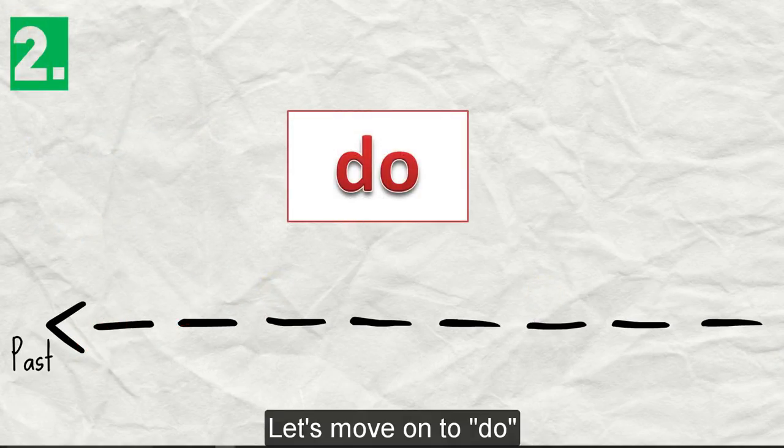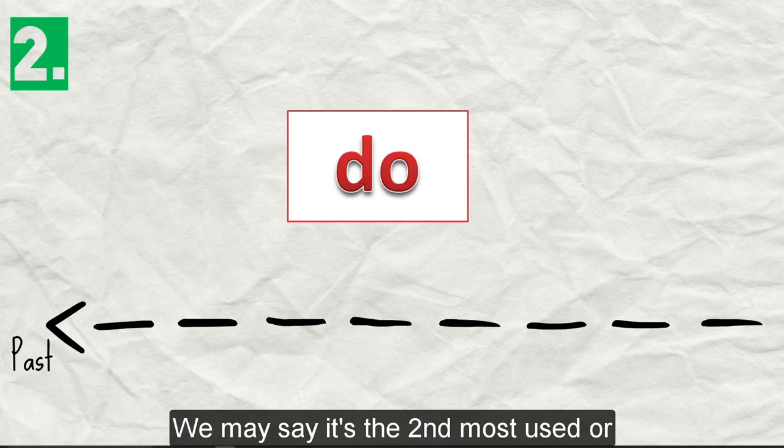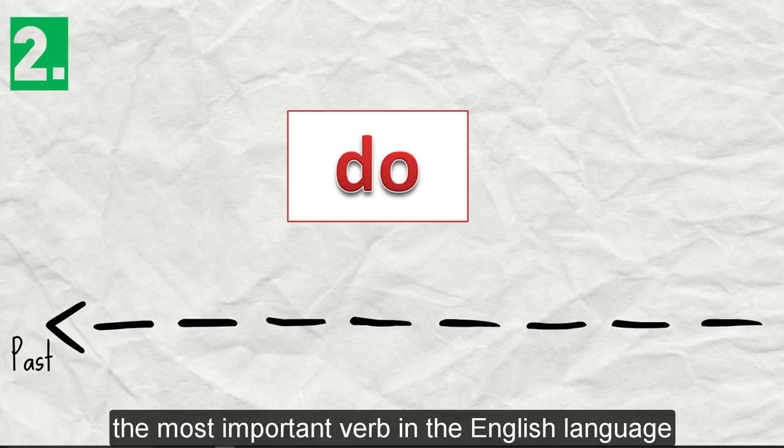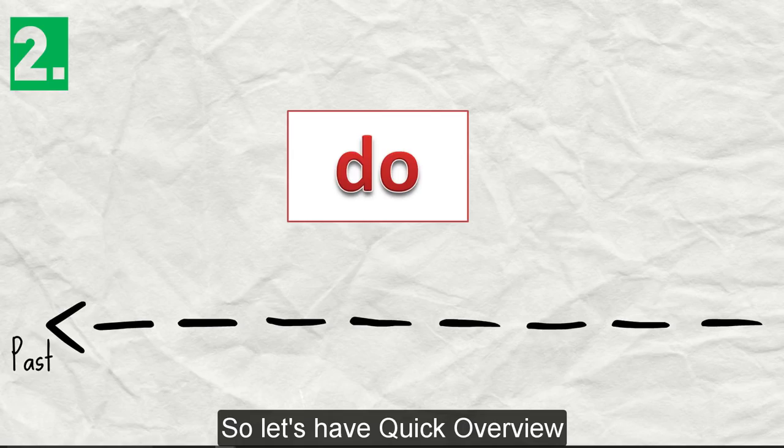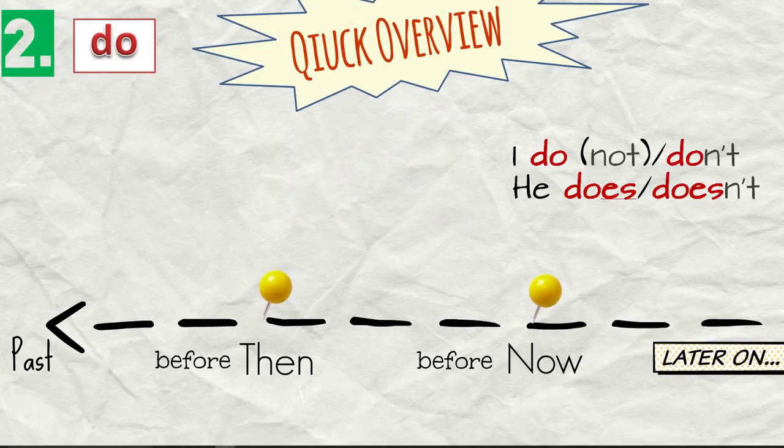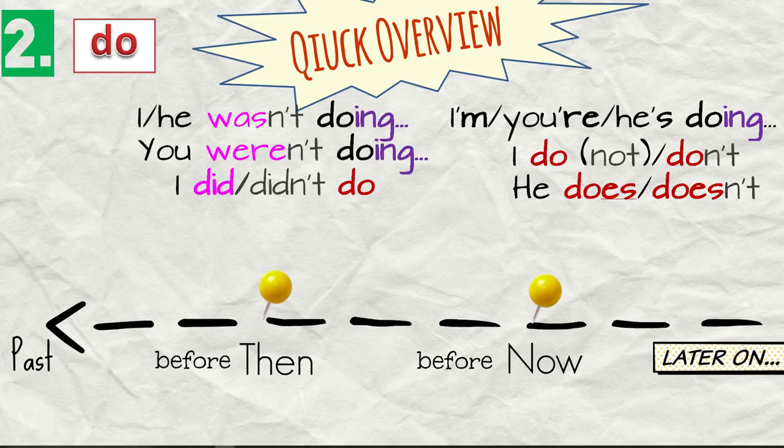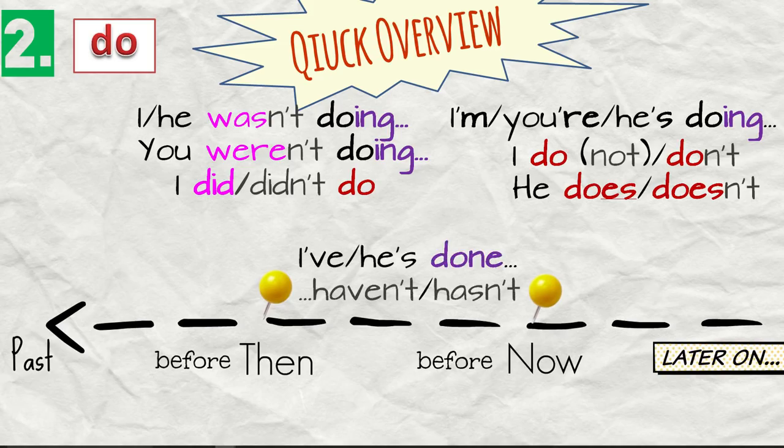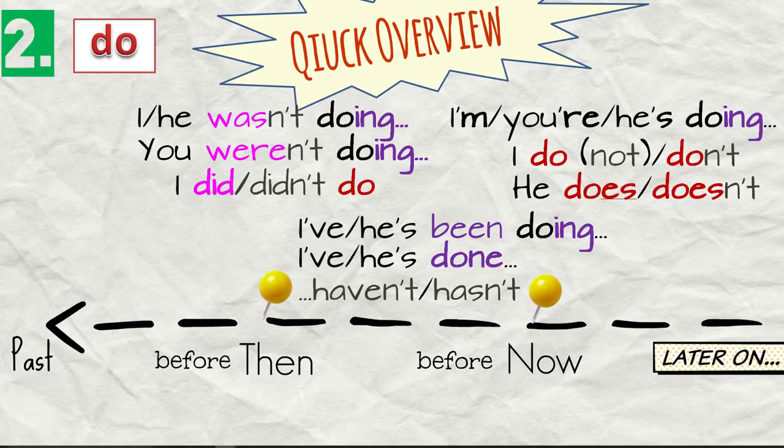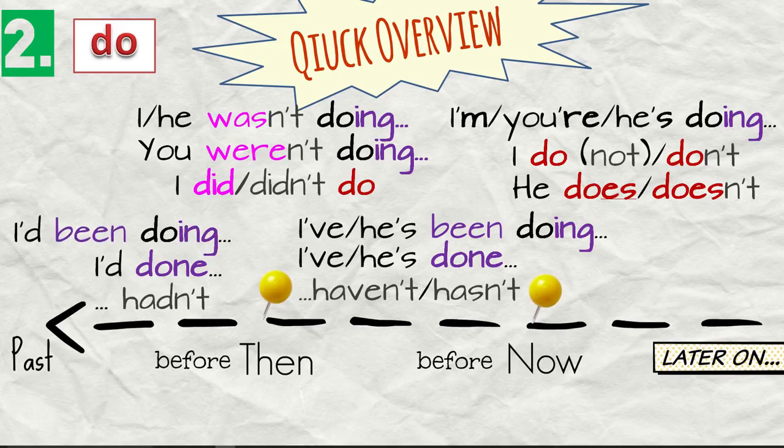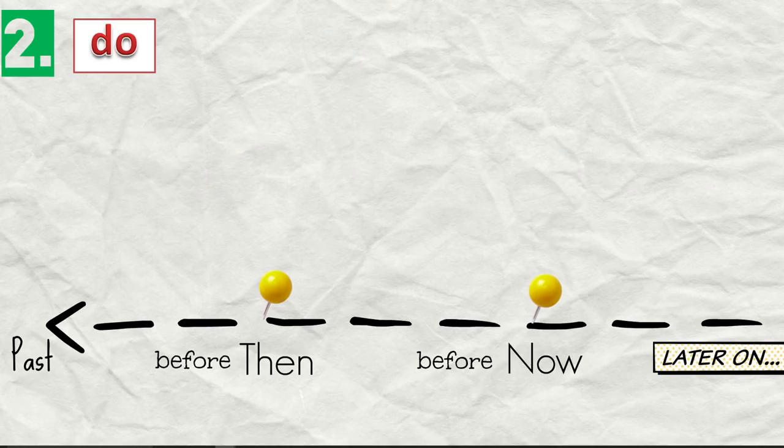Let's move on to do. We may say it's the second most used or the most important verb in the English language. Let's have a quick overview. We'll say I do or I don't, he does, he doesn't, I'm doing, you're doing, he's doing, I did or didn't do, I was doing, you were doing, or the negative I wasn't, you weren't doing, I've done, he's done, I've been doing, he's been doing, I'd done or I hadn't done, I'd been doing.